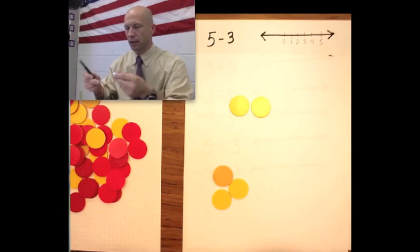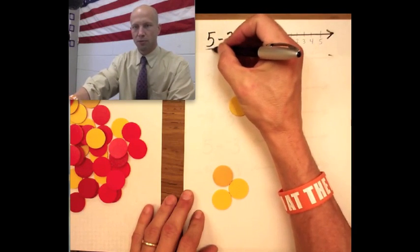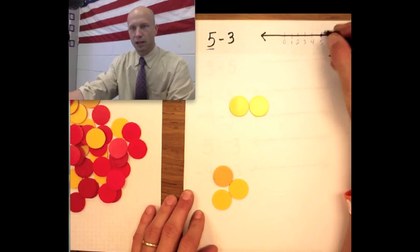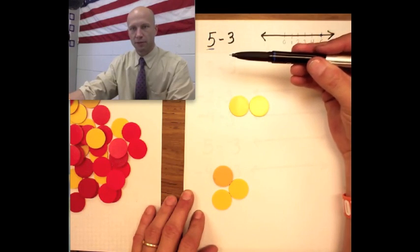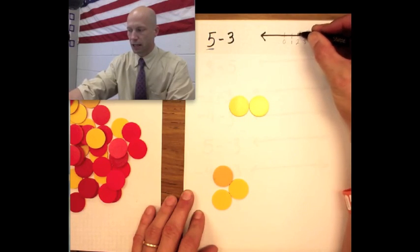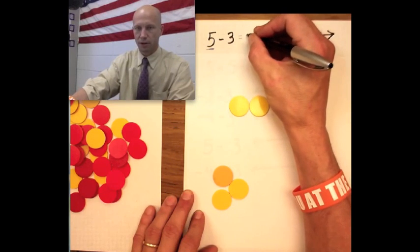We can see this on our number line model as well. We have 5 - this is always our starting number on the number line. We have 5 and we already know when we subtract we go to the left on our number line. So we just go left 3 places: 1, 2, and 3. Our answer is positive 2, just like we said it was. We knew this already from the tiles.